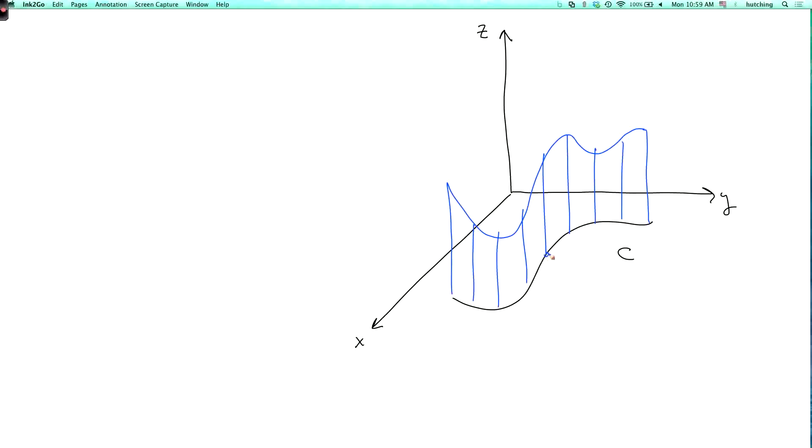So this is a point xy zero on the curve, and this is the point xy f of xy. And then if f is positive on c, then the integral over c of f ds is the area under the graph of f over c.